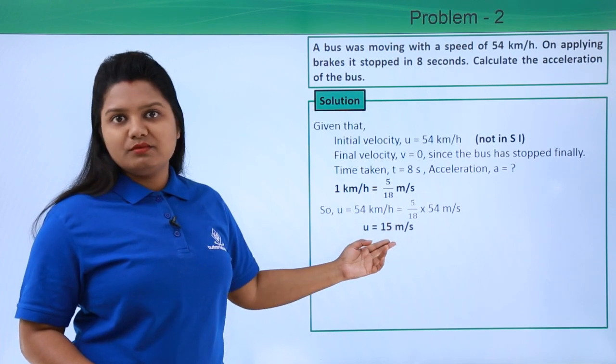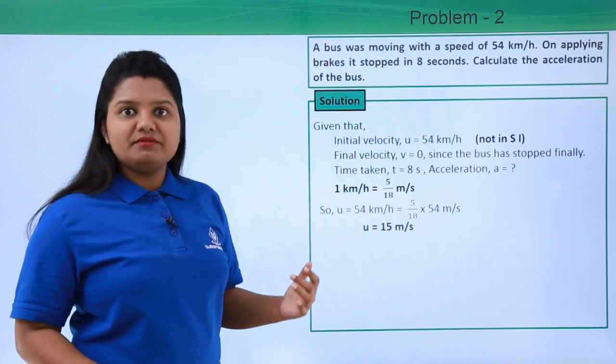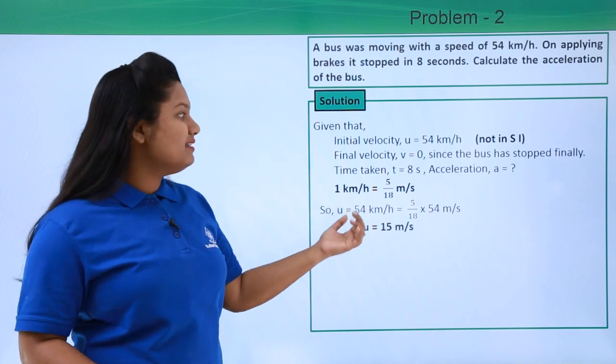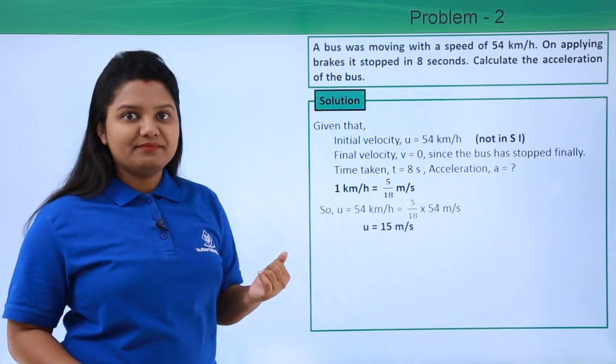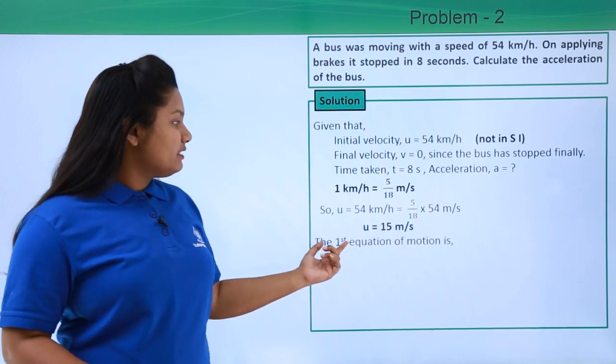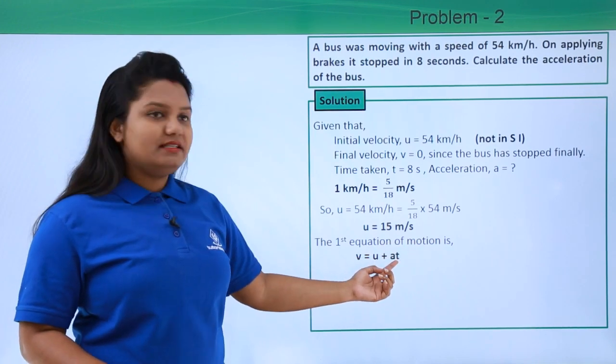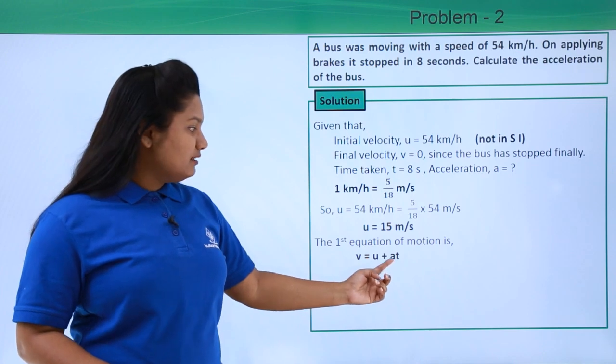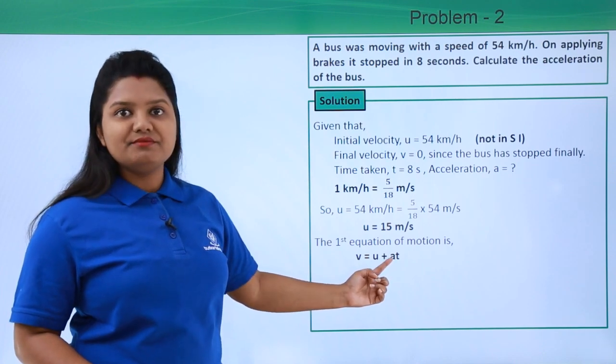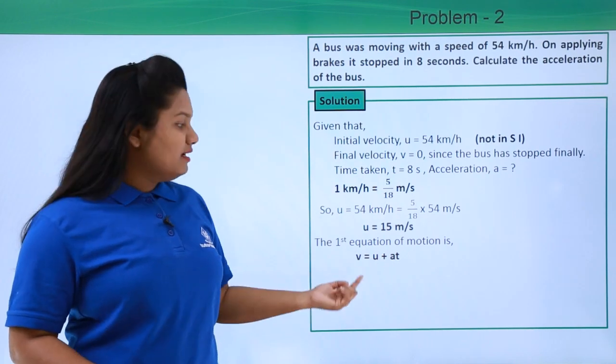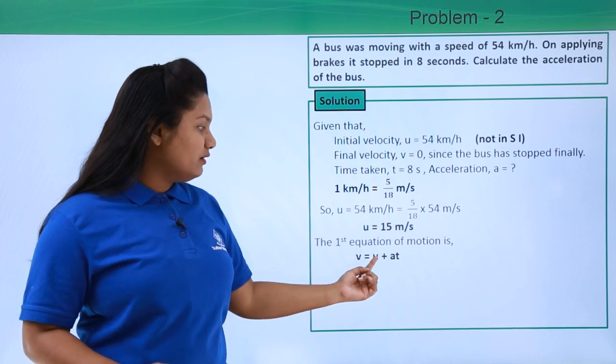So we can very well go ahead and find the acceleration in this case. From the first equation of motion, we know that v equals u plus at. Except this value of acceleration, we have all the other three quantities: the final velocity, initial velocity, and the time taken.